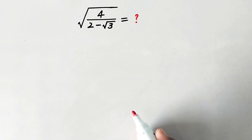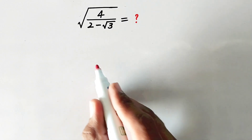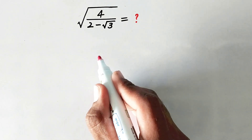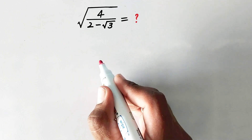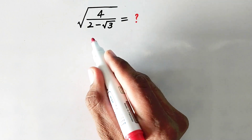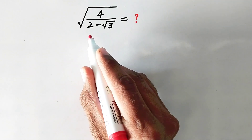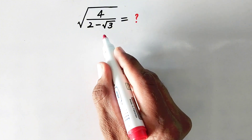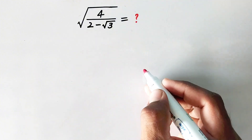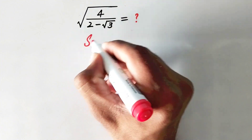Hello everyone and welcome to Explode Maths. In this video we are going to solve a very nice radical problem: square root of 4 divided by 2 minus square root of 3 is equal to what? Let us see its solution.